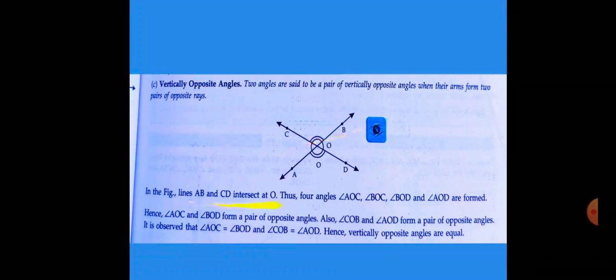In the figure, lines AB and CD intersect at O, thus forming four angles: angle AOC, angle BOC, angle BOD, and angle AOD. Hence angle AOC and BOD form a pair of opposite angles, and this angle and this angle are opposite angles, vertically opposite angles.